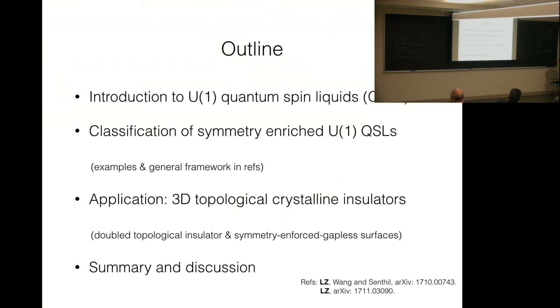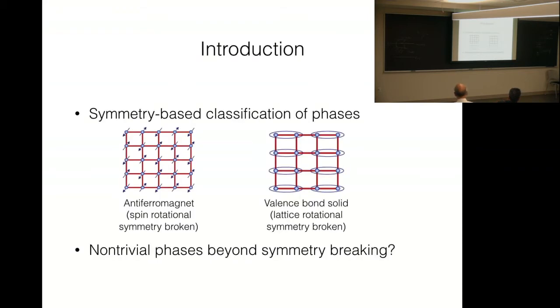Now, this is my outline. I will first introduce you to the concept of a U(1) quantum spin liquid. Then I will discuss briefly about the classification of symmetry in these 3D U(1) quantum spin liquids. More details can be found in the papers. And later, I will talk about three applications of the ideas developed here, applications to 3D topological crystalline insulators. I will talk about three examples. One of them is what I call a double topological insulator. The other topological crystalline insulators with symmetry-enforced gapless surfaces. That is, as long as the symmetries are preserved, then the surface state has to be gapless, in particular, a symmetric surface topological order is disallowed.